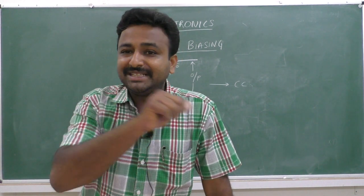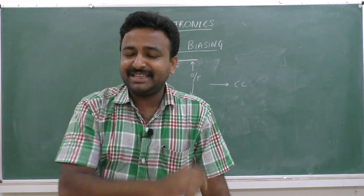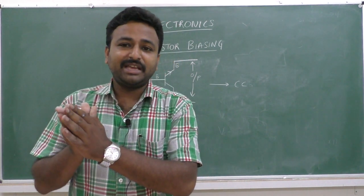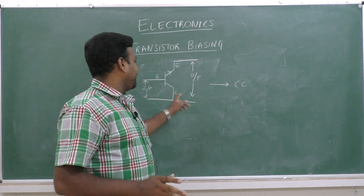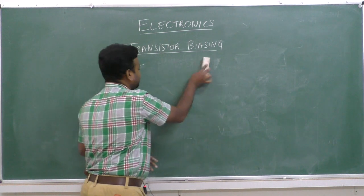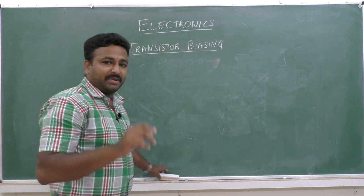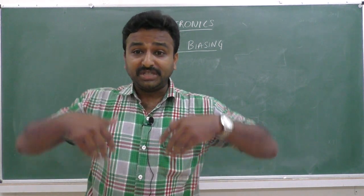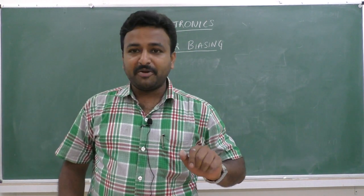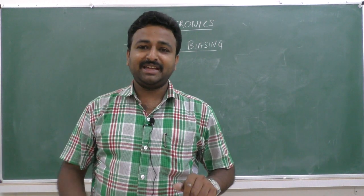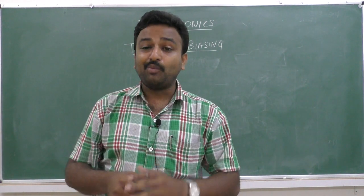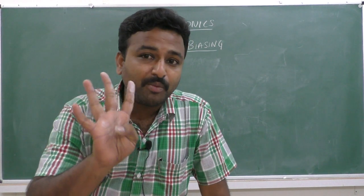A transistor has two junctions: the base-emitter junction and the collector-base junction. Each junction can be independently forward or reverse biased, giving four possible combinations. Therefore, a transistor has four modes of operation, though most textbooks mention only three modes.